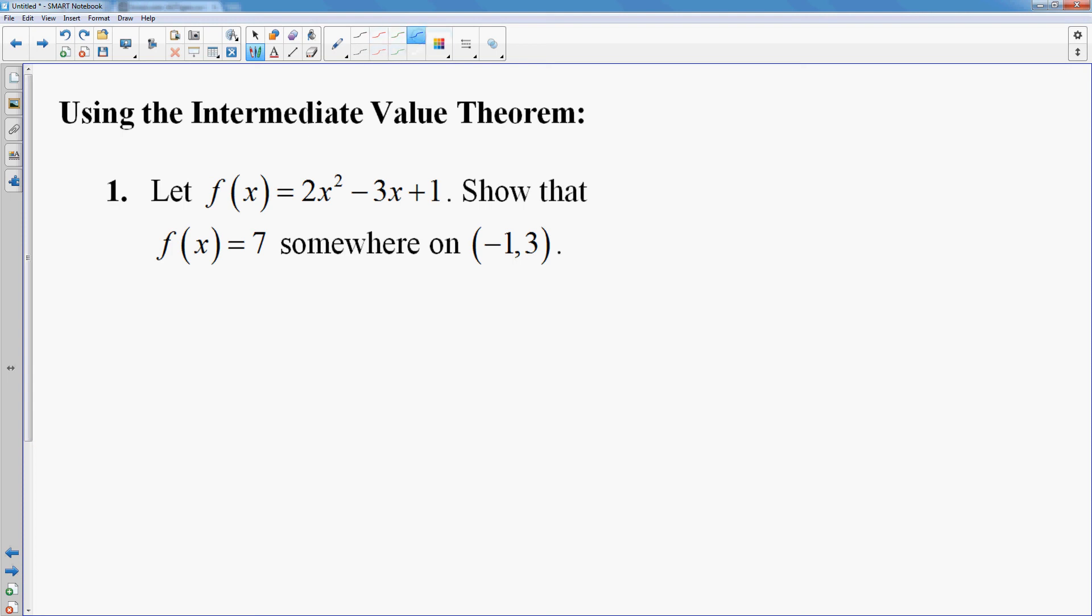Well, the way I'm going to show that is I'm first going to find out where my function begins and where it ends on this interval. It is a continuous function. This is a quadratic parabola. So I do know that the function is continuous, and I'm going to see, all right, my function begins at x equals negative 1. Let's find the y-coordinate when x is negative 1. So that would be 2 times negative 1 squared minus 3 times negative 1 plus 1. That would be 2 plus 3 plus 1 is 6. So I'm starting at the ordered pair negative 1, 6.